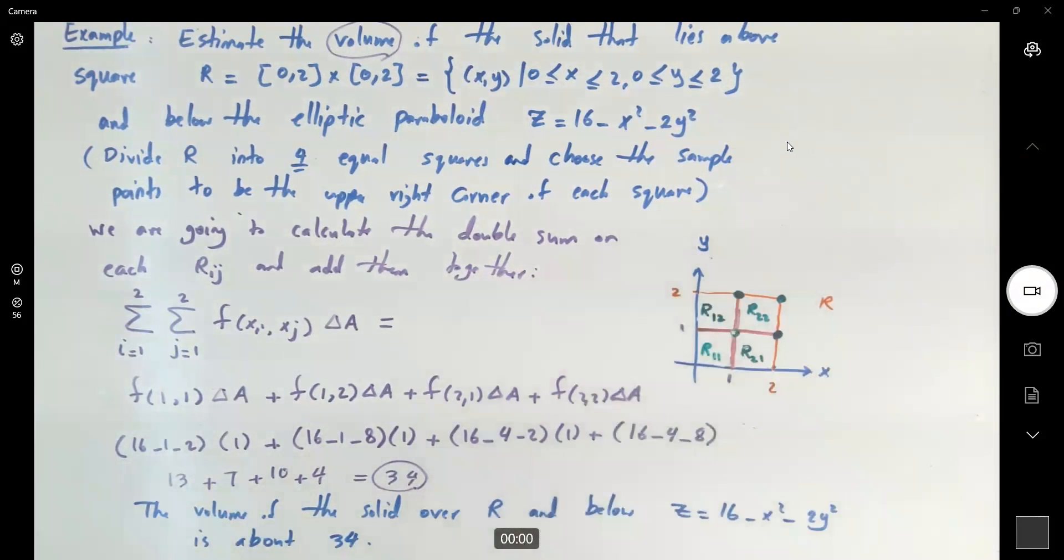Again, by using the Riemann sum method, you get an approximation of the volume. We're going to use shortcuts, present formulas, actually using what we learned in elementary calculus. And do the calculation for each of the double integrals. Sometimes it represents a volume.